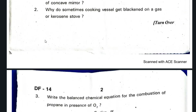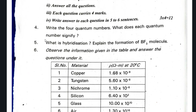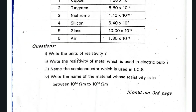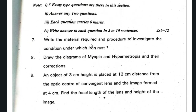Write the balanced chemical equation for the combustion of propane in the presence of oxygen. Section 1: Write the four quantum numbers — what does each quantum number signify? What is hybridization? Explain the formation of BF3 molecule. Table-relevant question. Write the materials required and procedure to investigate the conditions under which iron nails rust. Draw a diagram of myopia and hypermetropia and their correction.